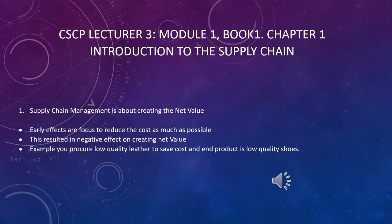The most important thing to remember is that supply chain management is about creating net value. If you don't deliver net value, everything goes wrong — you don't get anything out of it. Early efforts in supply chain management focused on reducing cost, but the net effect is negative when you don't create value.